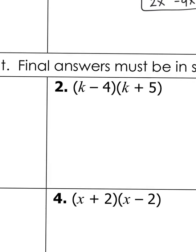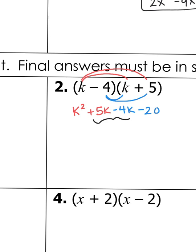Now I'll do number 2. Following FOIL: K times K is K squared. Then Outside — K times 5 is positive 5K. Then Inside — negative 4 times K is negative 4K. Then Last — negative 4 times positive 5 is negative 20. Combine the middle: 5K minus 4K makes 1K. So the answer is K squared plus K minus 20.